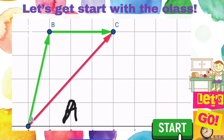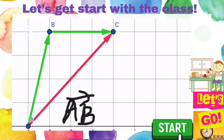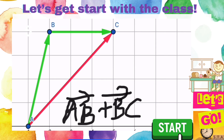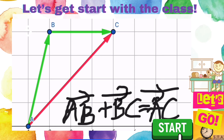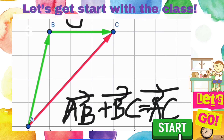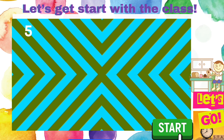I will discuss another example of the triangle law. Vector AC is equal to vector AB plus BC. Or we can say vector AB plus vector BC is equal to vector AC. This is the triangle law for vectors. I will discuss more on the parallelogram law and polygon law in my next video lesson.